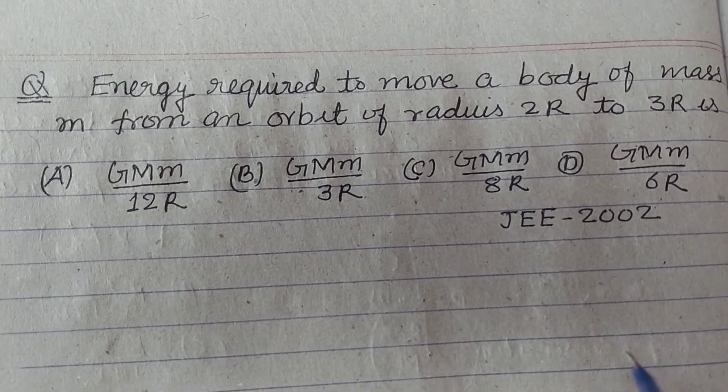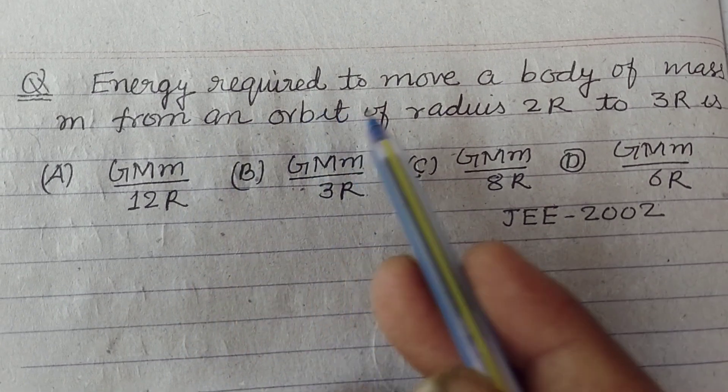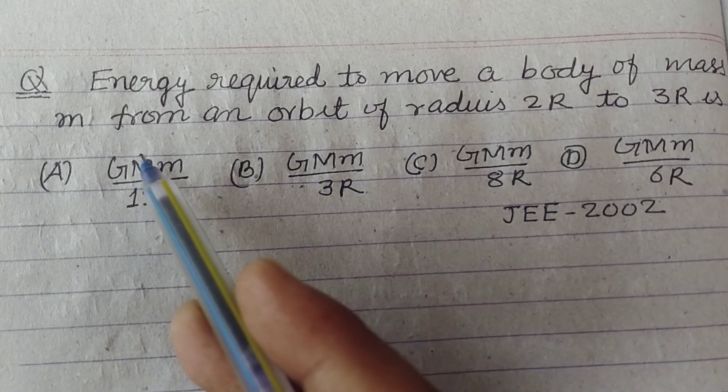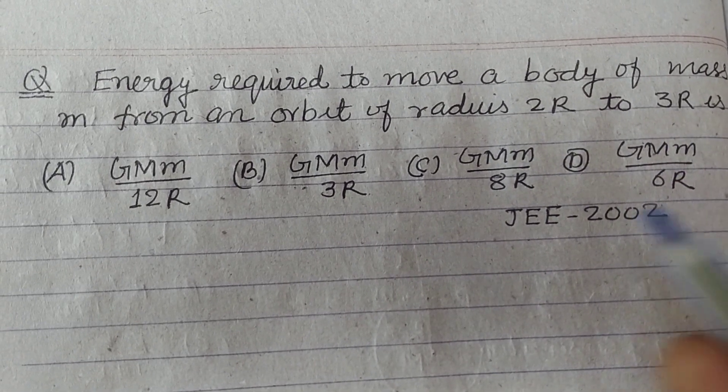Hello student. Question from JEE-2002. Energy required to move a body of mass M from an orbit of radius 2R to 3R is.